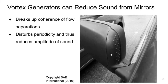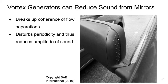Another option is to install vortex generators at the inside edges of the mirrors to reduce sound. This is not seen all that often on smaller vehicles, but you will see it sometimes on larger trucks — both commercial and passenger — where the mirrors are bigger. These bumps break up the coherence of flow separations, which disturbs the periodicity and gives some mutual cancellations to the sounds, thereby reducing their amplitude.